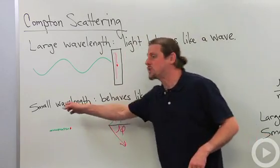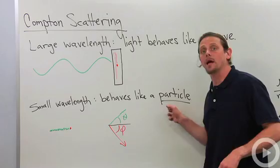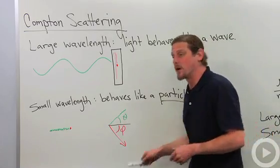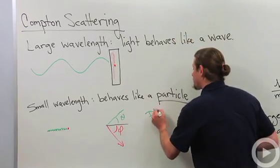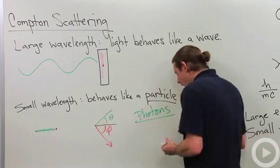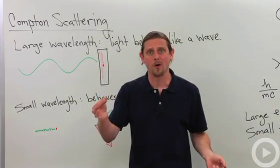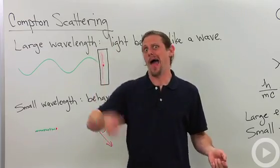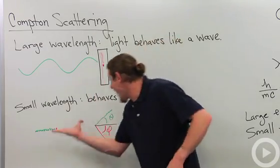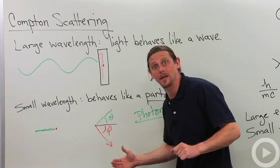However, when the light has a very small wavelength, it behaves like a particle. So here we've got photons. And when you take a particle and you throw it at another particle, this particle's not going to go like that. You're going to have a collision. And so we actually get a collision like this.